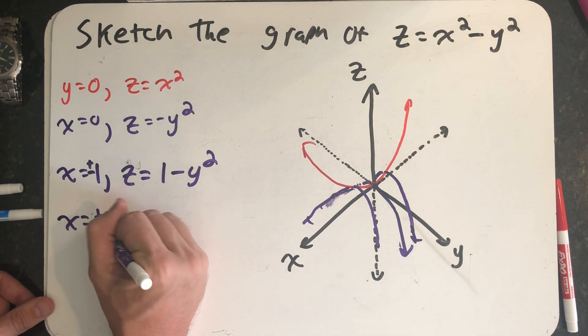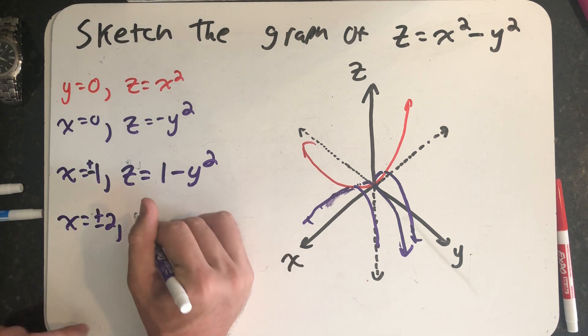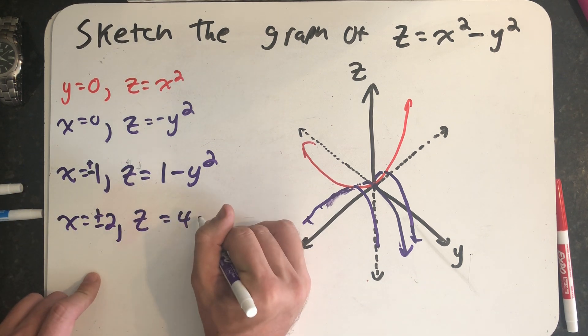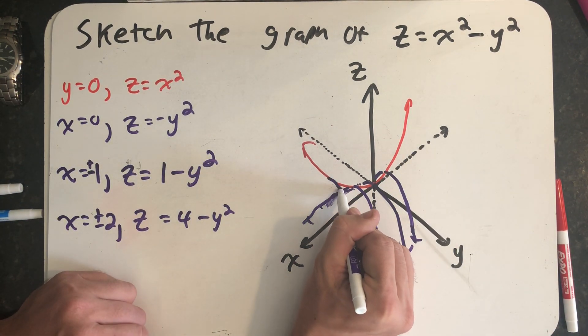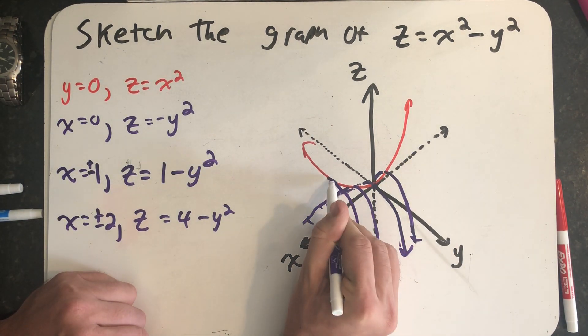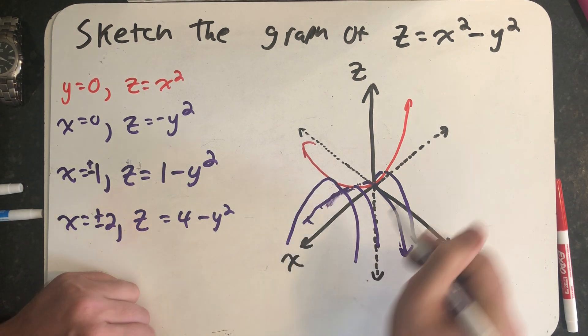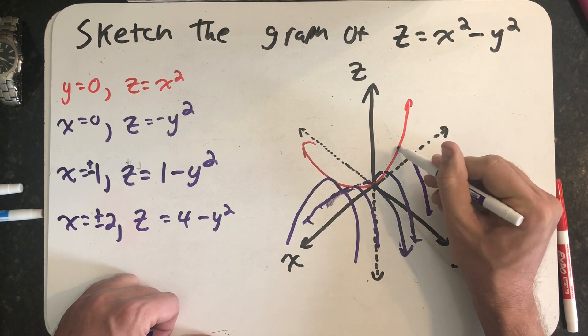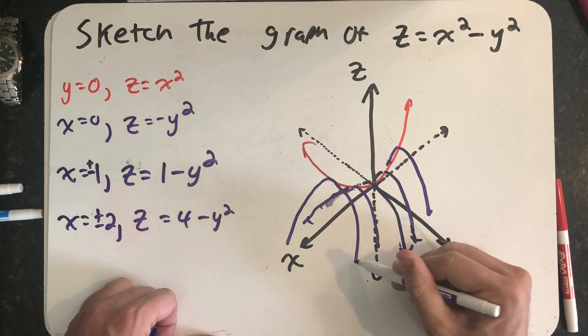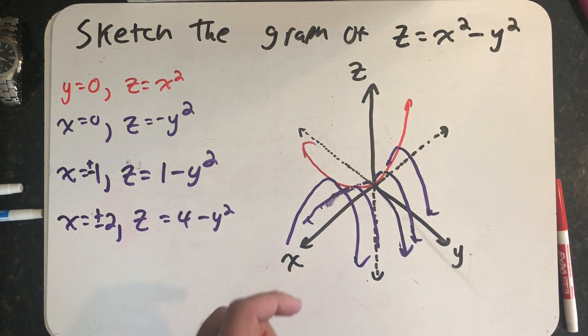Let's imagine that x is plus or minus two. No matter which one, we get z equals four minus y squared. If x is positive two, I get that parabola that's even further up. And at x equals minus two, I get that same parabola. I think I'm starting to understand what shape this is.